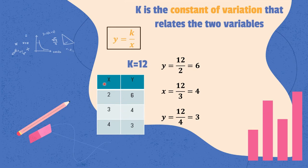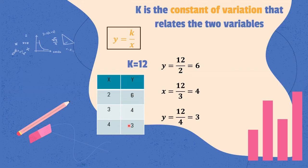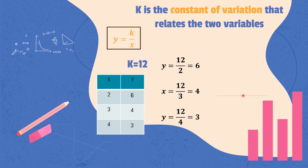Now, if we multiply the value of x and y, we have 2 times 6, we have 12. 3 times 4, 12 is the answer. And 4 times 3, we also have 12. We all get 12 as the product when we multiply the variables x and y. Therefore, to get the constant of variation, we simply need to multiply the given variables, which is x and y. So our formula to get k is k equals x times y.